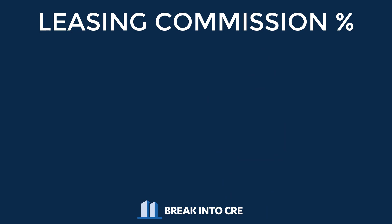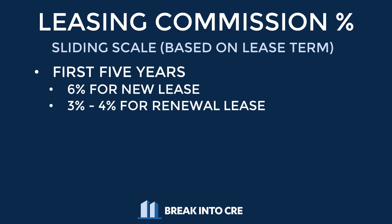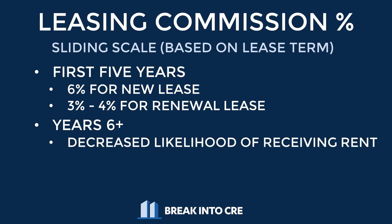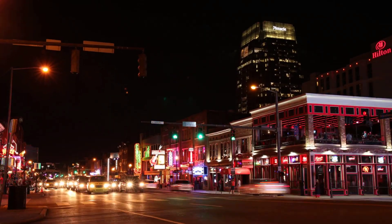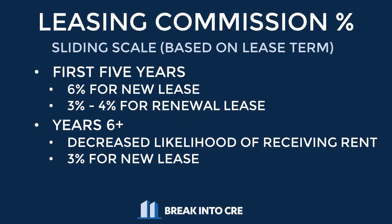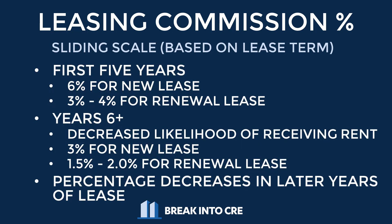These percentages are also usually on a sliding scale based on the lease term. For the first five years of the lease, you may see leasing commissions at around 6% for a new lease and about 3-4% for a renewal lease. But for a lease that goes out 10 years or more, for years 6 through 10 and years 11 onwards, the landlord is generally going to see a decreased likelihood of actually receiving that rent. So you may not end up seeing the base rent that was contractually obligated to you. Generally what happens is you'll see a higher percentage up front as a leasing commission, and then in years 6 through 10, you might see 3% for a new lease and 2% or 1.5% for a renewal, with the leasing commission percentage decreasing as you get further into later years of that lease.